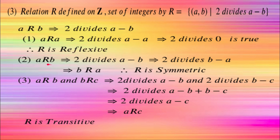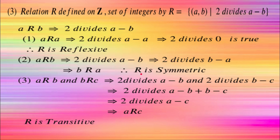Check symmetry: if a is related to b, then 2 divides a minus b by definition. Since one is the negative of the other, 2 also divides b minus a. So b is related to a. It is symmetric.